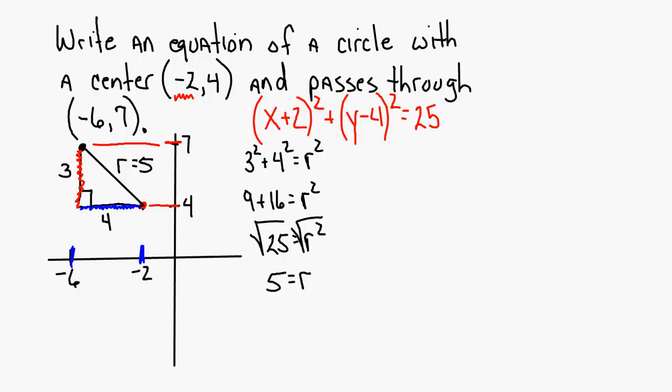So you can write the equation given the radius and the center, you can write the equation given the diameter and the center, and you can write an equation given the center and a point on the circle. Everyone okay with those three different situations?